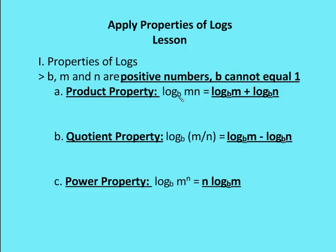So I have the product property: log base B of M times N is equal to log base B of M plus log base B of N. So the factors of MN, I separate and I include an add sign. I add them together using the same base. Quotient property: log base B of M divided by N is the same as log base B of M minus log base B of N. So again, I have the divisor and the dividend.